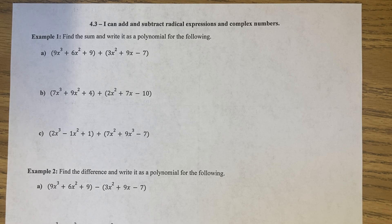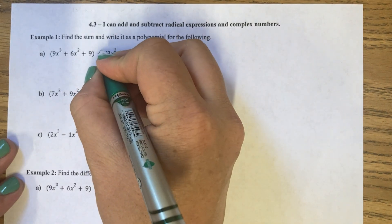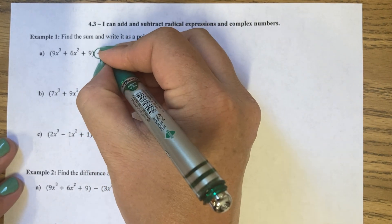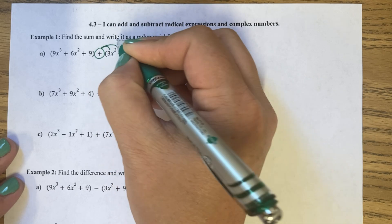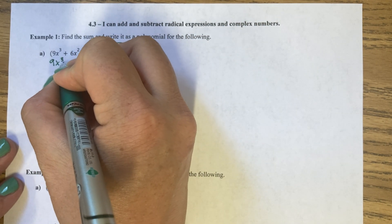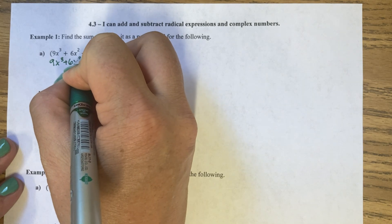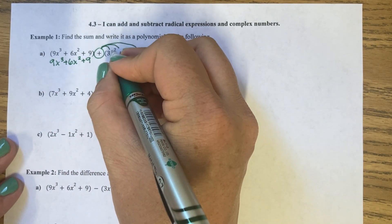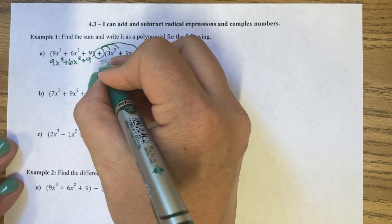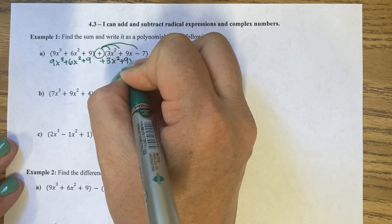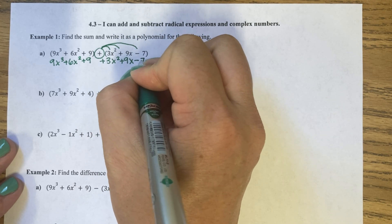For our first example, we have a plus sign in the middle. This plus sign is only going to distribute to the terms after it. So we have 9x cubed plus 6x squared plus 9. When I distribute a positive, it leaves the signs alone — so it stays a positive 3x squared, a positive 9x, and a minus 7.